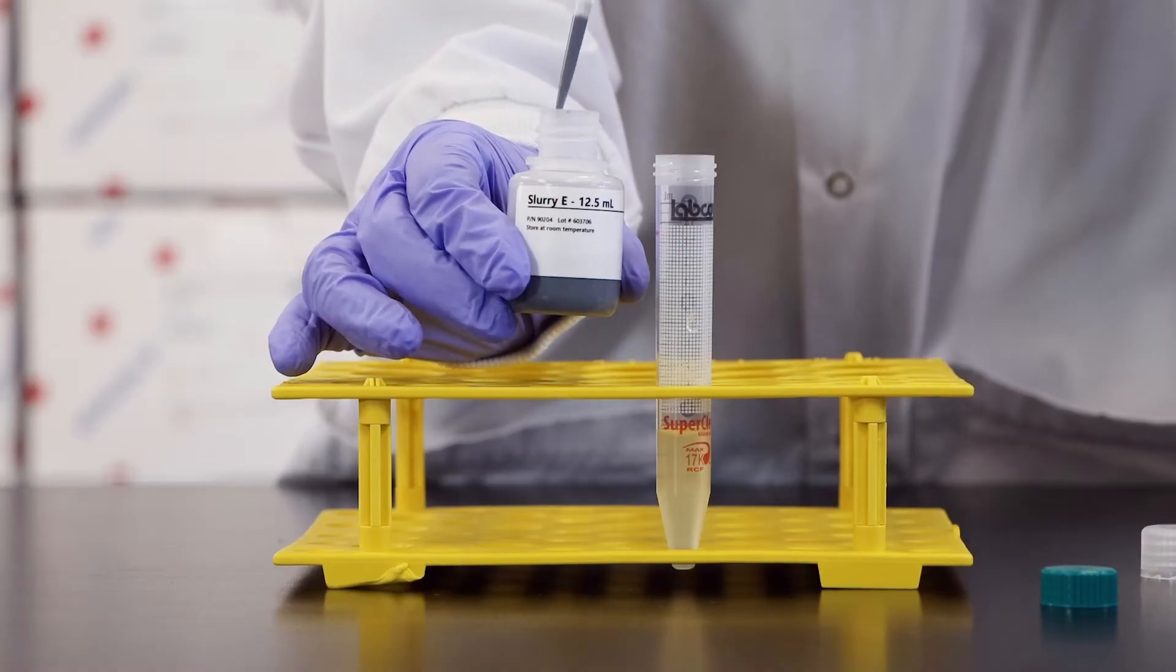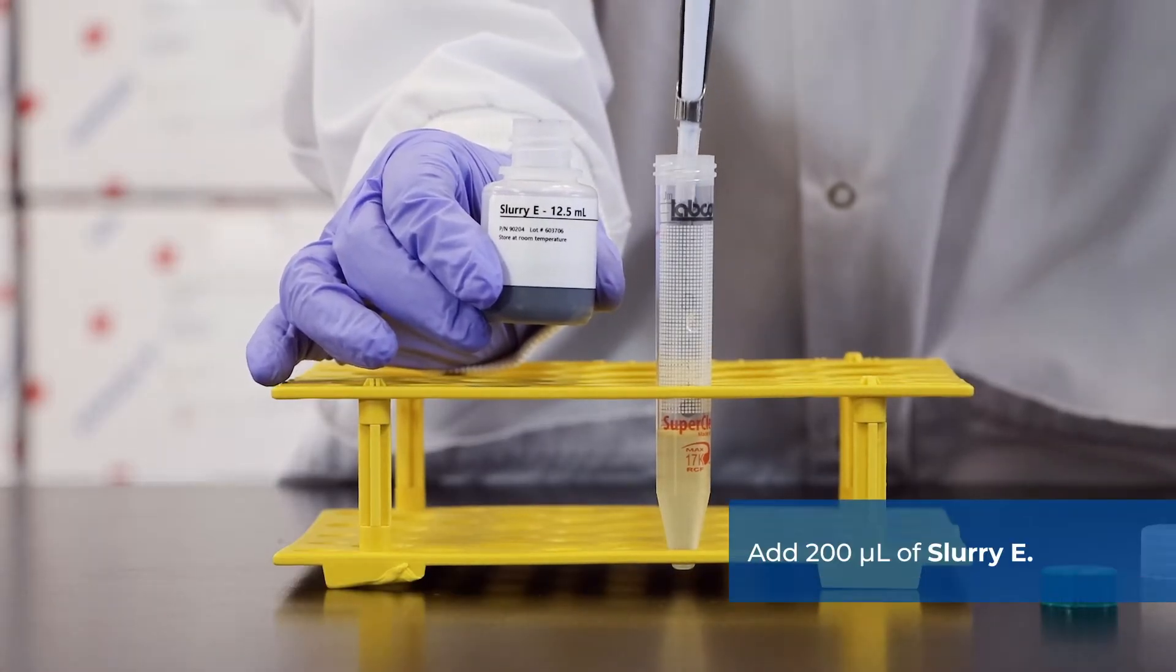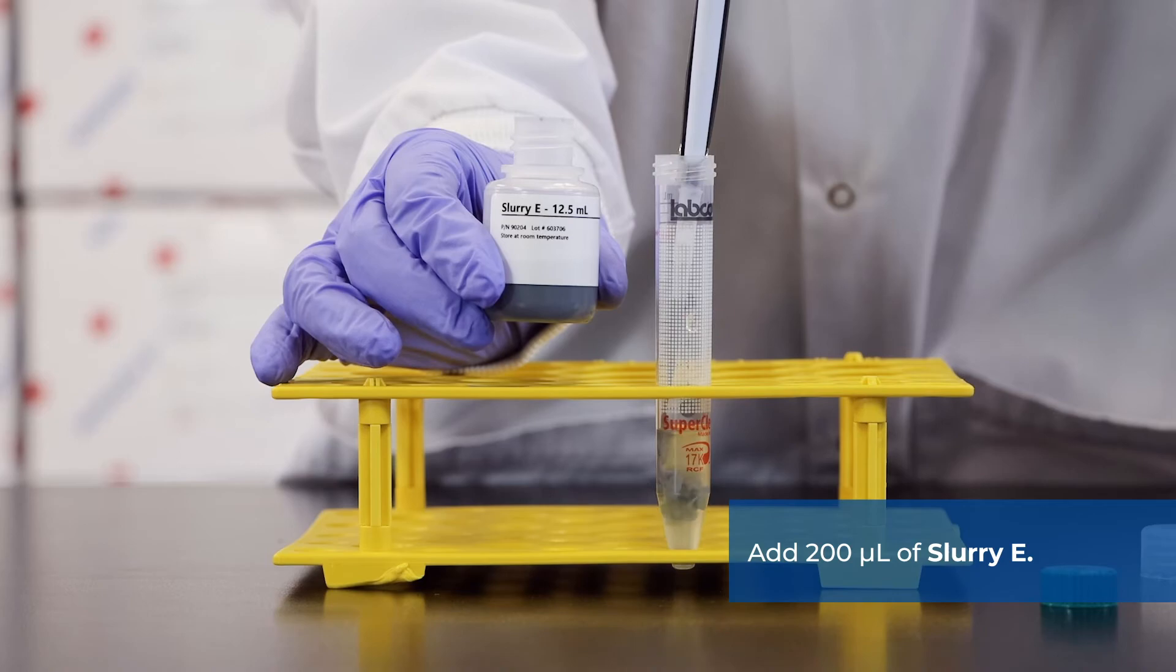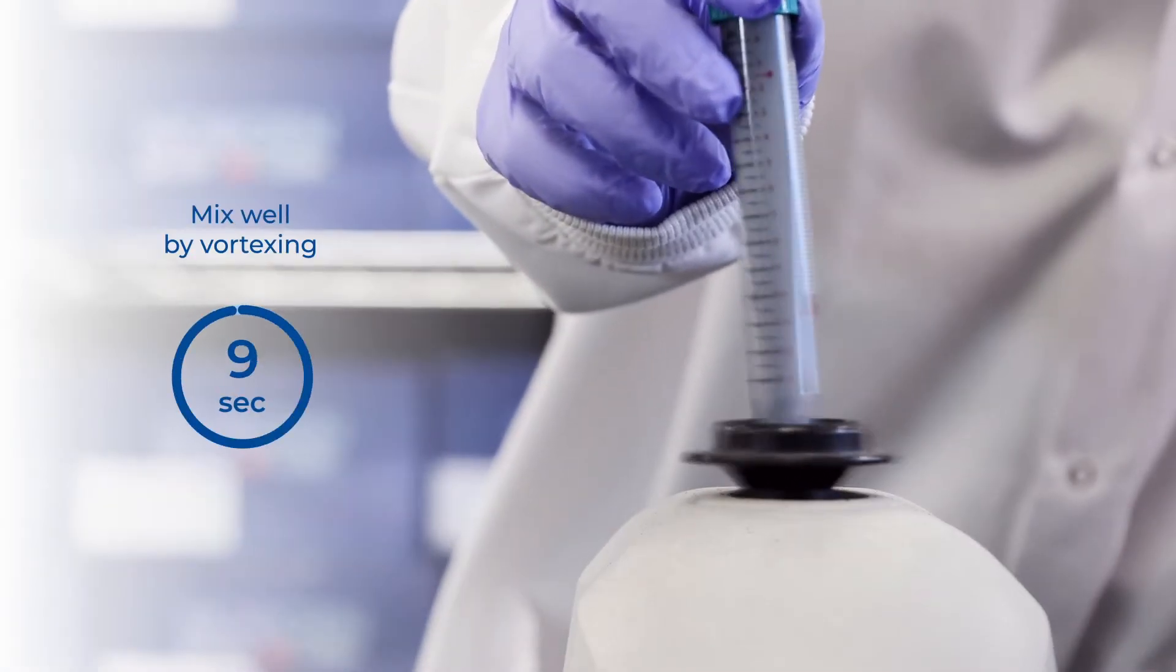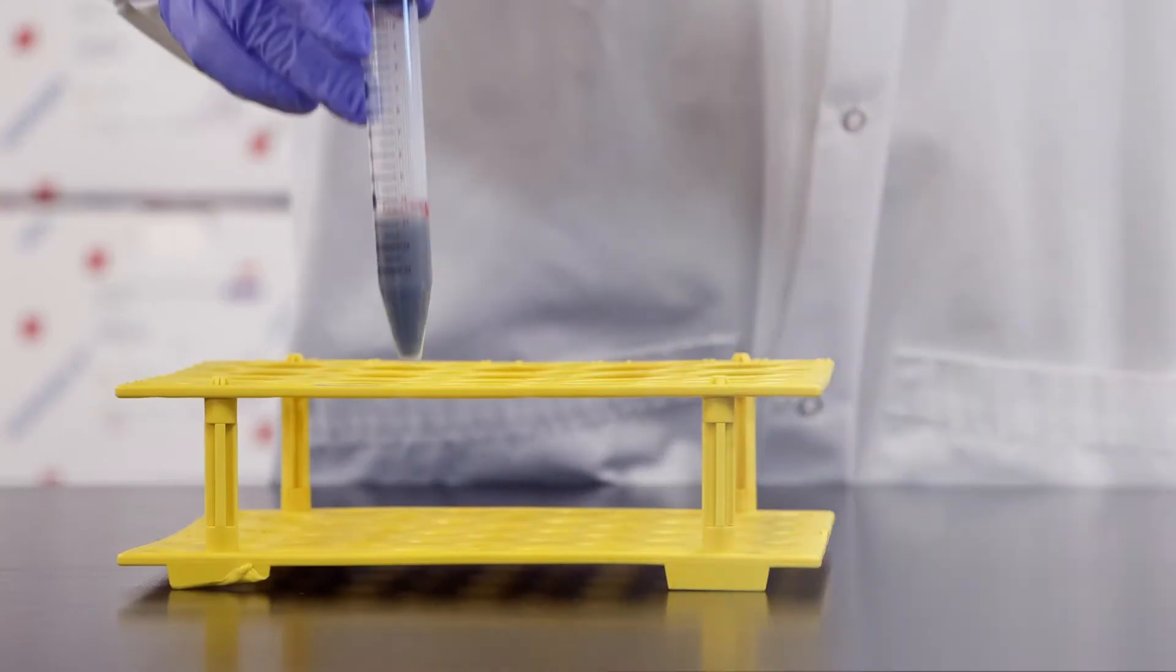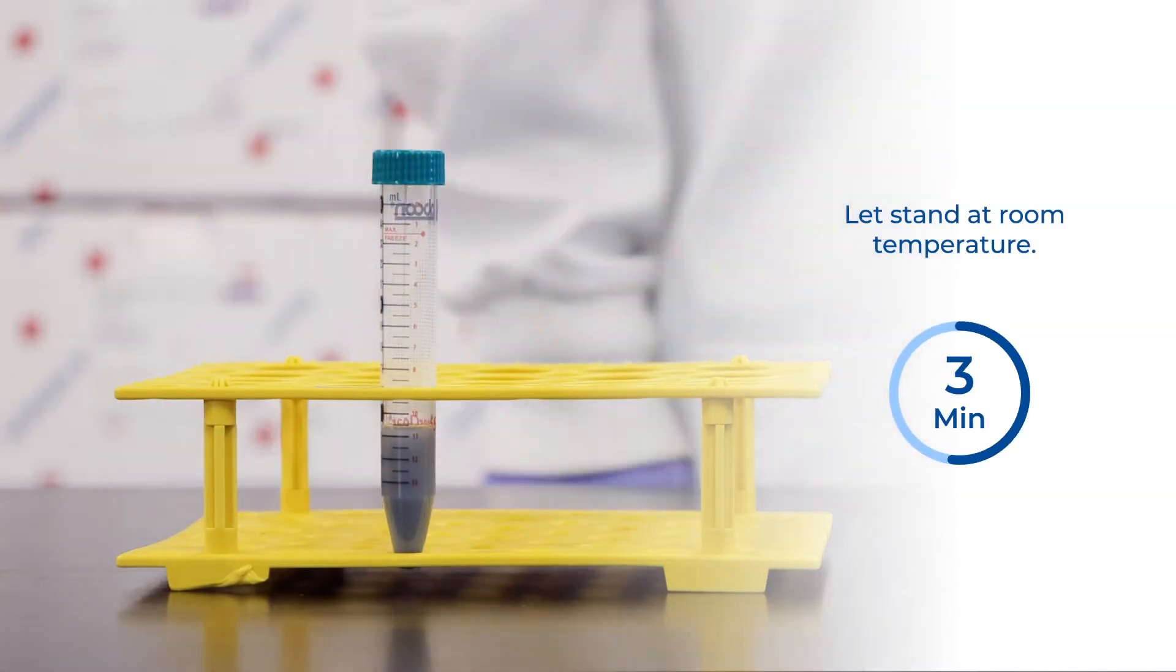To the mixture from the previous step, add 200 microliters of Slurry E. Mix well by vortexing for 10 seconds and let stand at room temperature for 5 minutes.